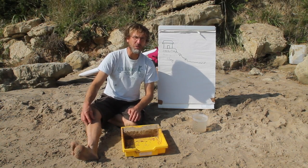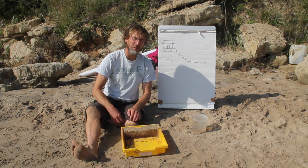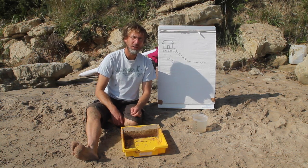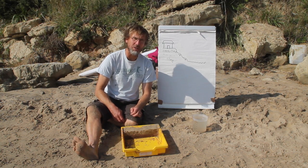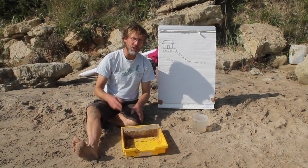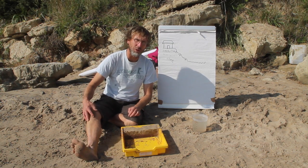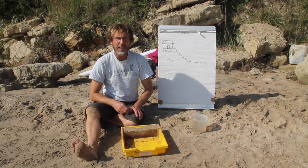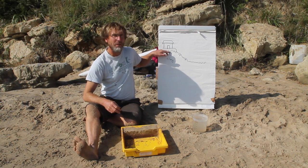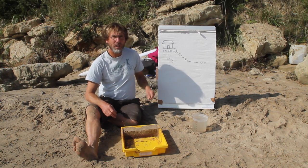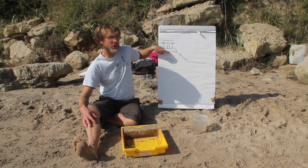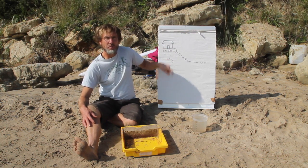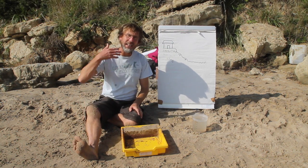In one part of Swanage Bay the cliffs are falling down because of the effect of water in the rocks, and not directly as a result of erosion by the sea. You'll be seeing this bit of cliff during your fieldwork beneath the Pines Hotel. Here the rocks are made of sandstone and clay. When it rains, water fills up the sandstone making it heavy, and it slides over the clay creating landslides.